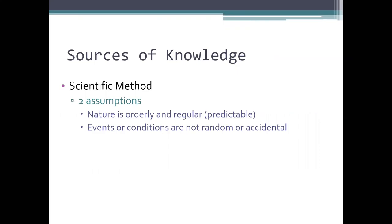Sources of knowledge: two assumptions — nature is orderly and regular, and events or conditions are not random or accidental. We know that's not entirely true — we trend towards disorder, towards entropy. Look at the way we are right now: your house probably looks beautiful because you've had time to clean it, but once we go back to work we're going to trend back towards disorder. That's just the way it is.